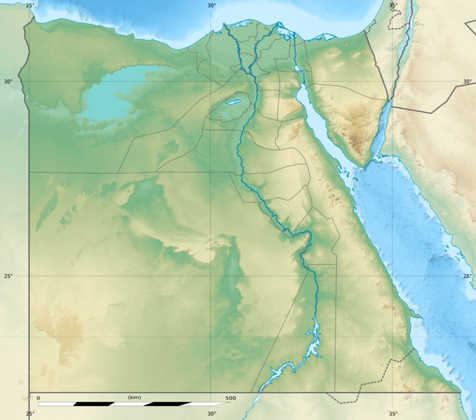The earthquake occurred along the Dead Sea Transform (DST) fault system, an active tectonic plate boundary with seismicity characterized by long-running quiescent periods with occasional large and damaging earthquakes, along with intermittent earthquake swarms.